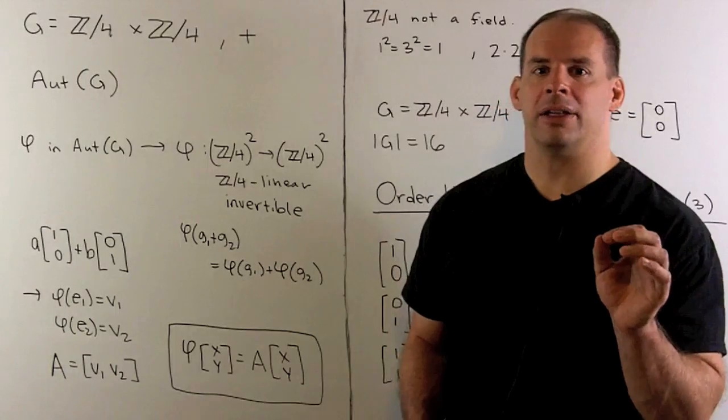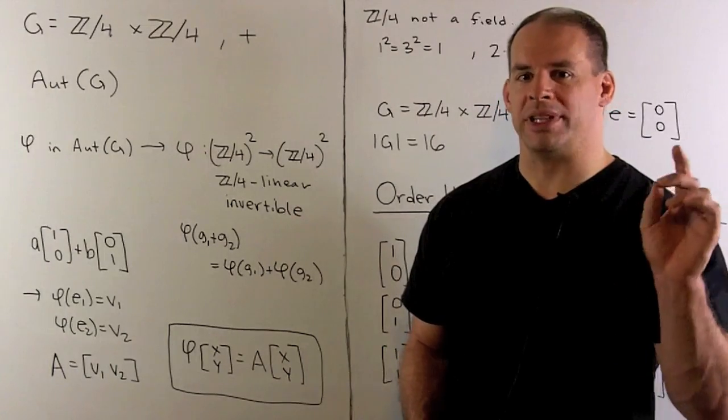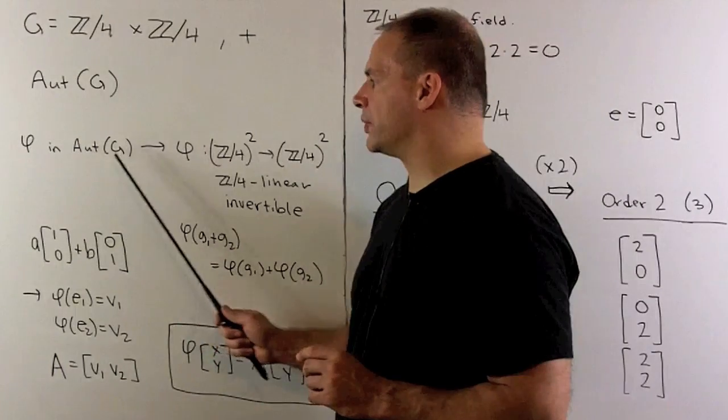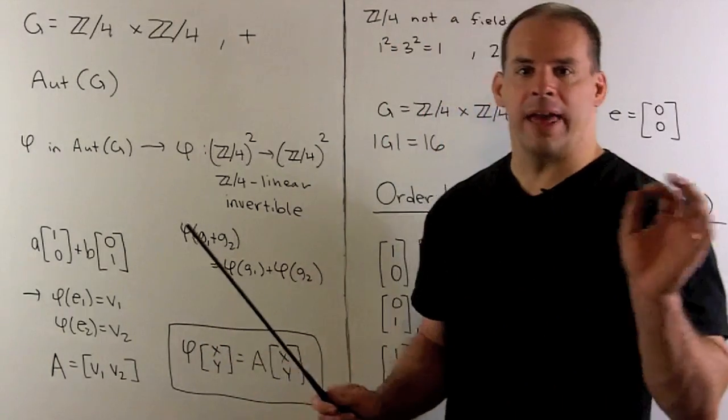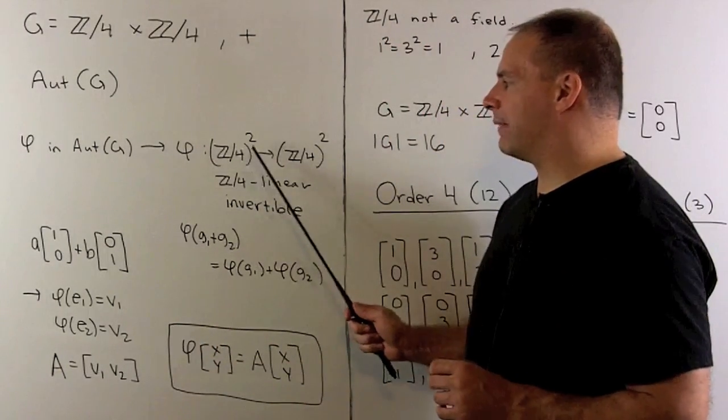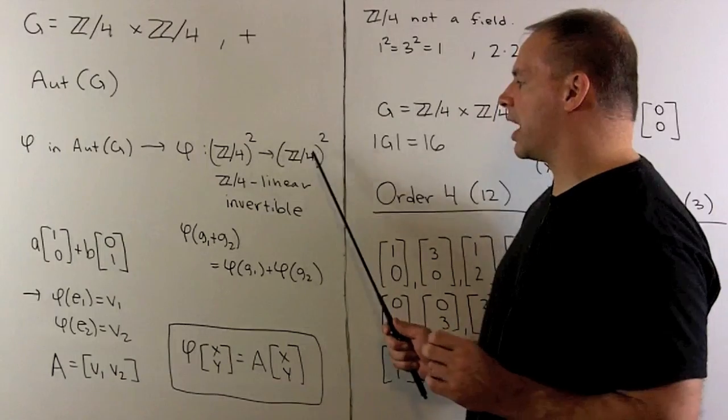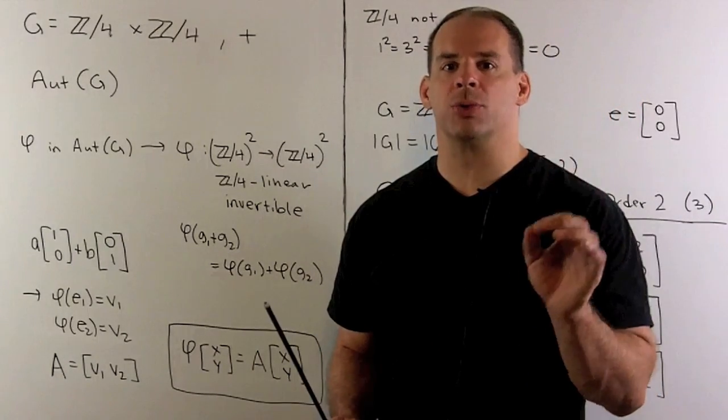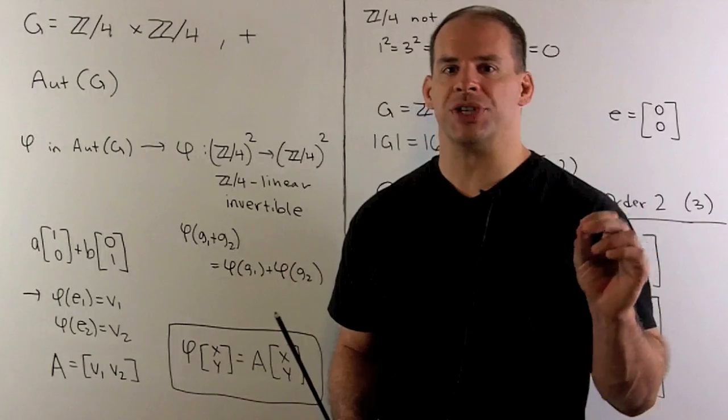Now, our game plan to find the automorphism group will be the same as before. If I have a phi in the automorphism group, that'll be a map from Z mod 4 cross Z mod 4 back to itself. So, we'll regard those elements as column vectors with two entries, those entries in Z mod 4.